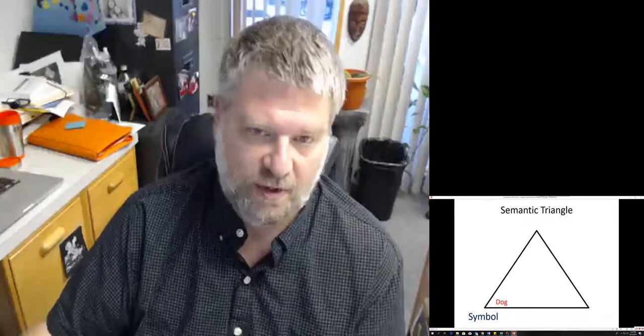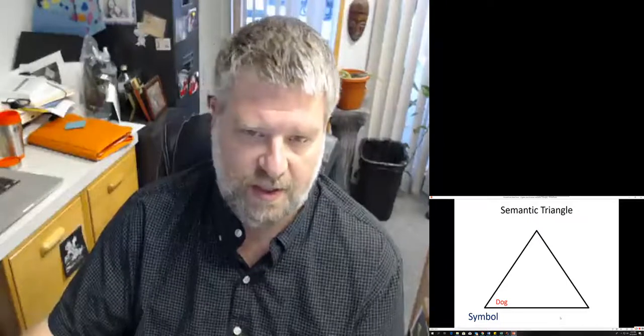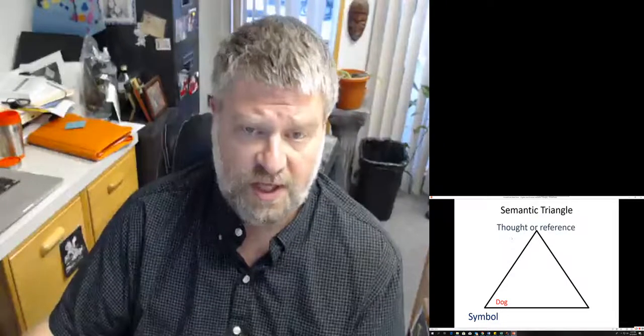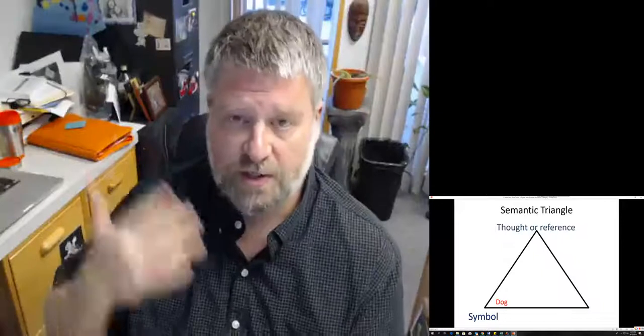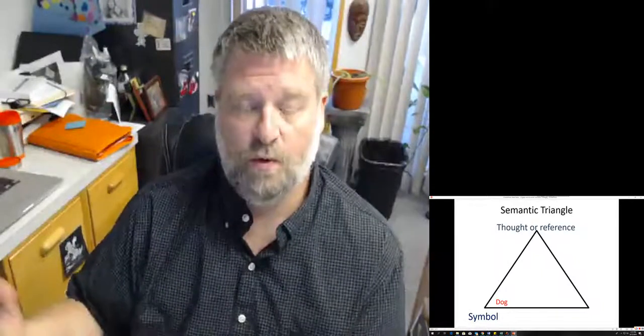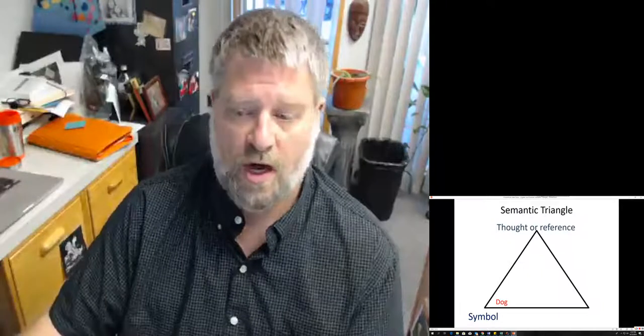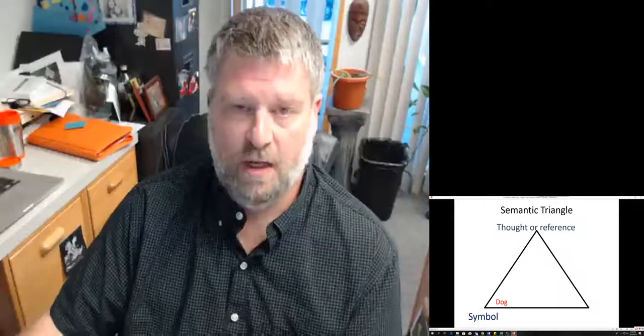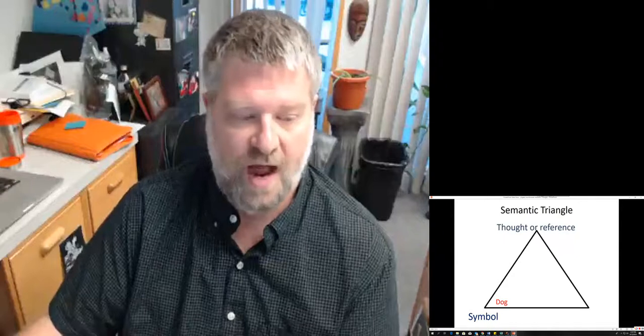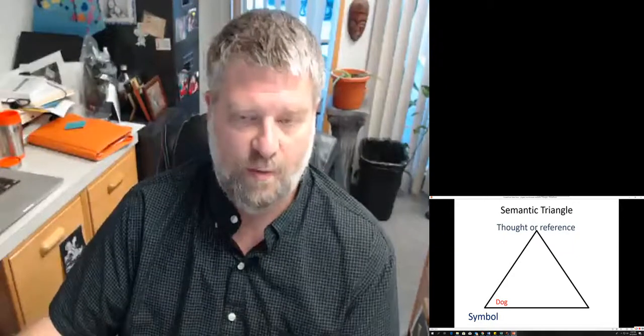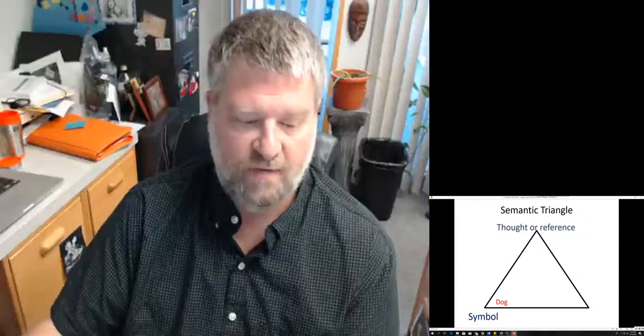With every symbol, there's a couple of other things that are interacting in these different vertices. First is the thought of the reference. That is literally the thing that happens between your ears, the thing that comes to your mind whenever you hear the word dog. When you hear that word dog, you might be thinking about maybe a dog that you grew up with, maybe the current dog that you have now.